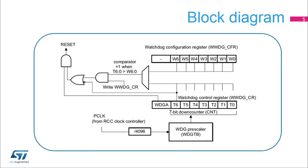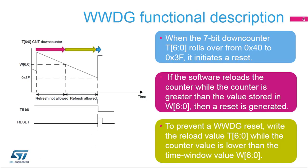If the down counter is reloaded too early or too late, the window watchdog will initiate a reset. This diagram illustrates how the window watchdog operates. When the 7-bit down counter T6-0 bits roll over from 0x40 to 0x3F, it initiates a reset when the T6-bit is cleared. This happens when the application software did not react within the expected time window. If the software reloads the counter while the counter is greater than the values stored in W6-0 bits, then a reset is generated. This happens when the application refreshes the counter too early.